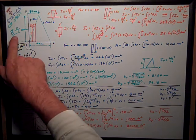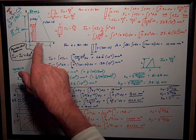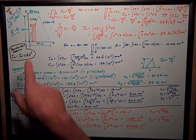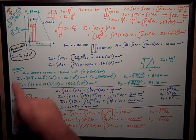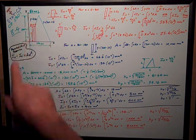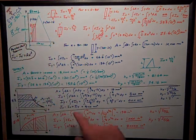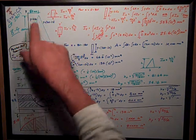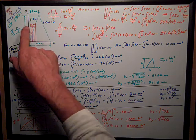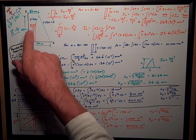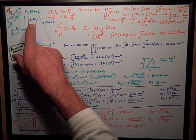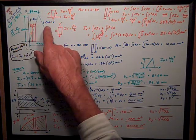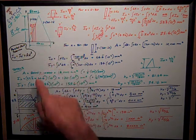It started with problem 8-4, which was a triangle, base 180, height 200. It's not a symmetric triangle — it's 80 millimeters to that point. First thing we have to do is develop an equation for the sloping line on either side. The sloping line on the left side is y = 2.5x. The sloping line on the right side is y = 360 minus 2x.